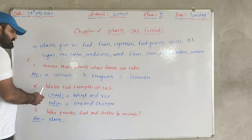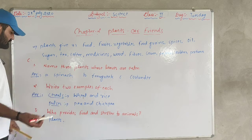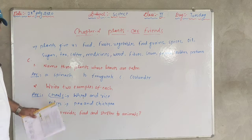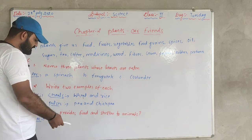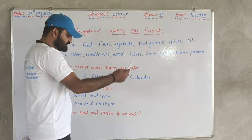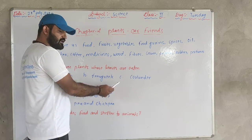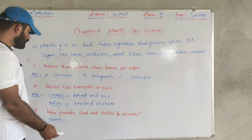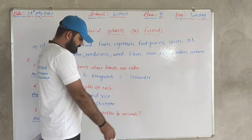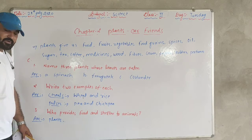Next, I am going to give two examples of each. Two examples of cereals: wheat and rice. Two examples of pulses: gram and chickpeas. Here are two examples of pulses.